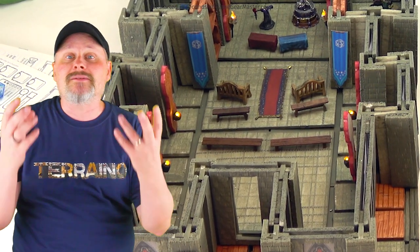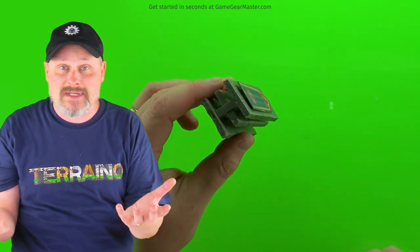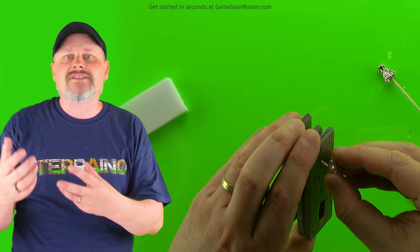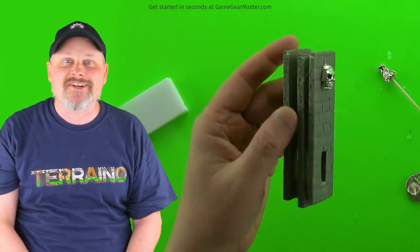We're going to start making some hanging flags. They are printable textures in the tech and torches manual. And then we're going to talk about some other items you can grab on the Game Gear Master online store to also make decorators. So let's get started.